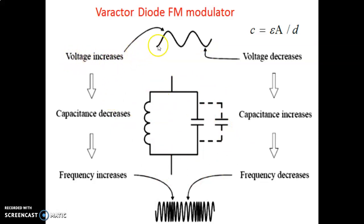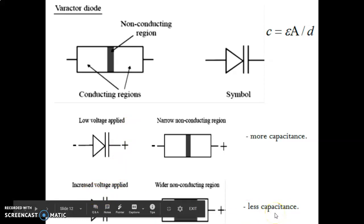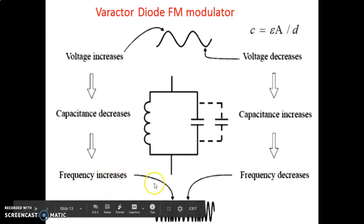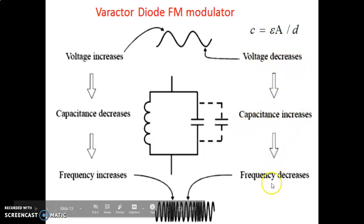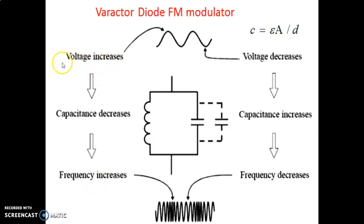When the modulating signal voltage increases, capacitance decreases, as proved in the previous slide. When the capacitance decreases, we know the relationship between capacitance and frequency — they are inversely proportional, so frequency will increase. When voltage increases, frequency increases. On the other side, when the voltage decreases, the capacitance increases and therefore frequency will decrease. So we get a direct relation: when voltage increases, frequency increases. The frequency deviation is directly proportional to the amplitude of the modulating signal, and that is why this is called a direct FM modulator.